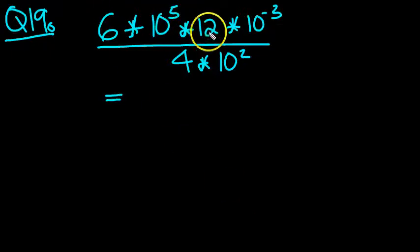6 times 10 to the 5, times 12 times 10 to the minus 3, all divided by 4 times 10 squared.